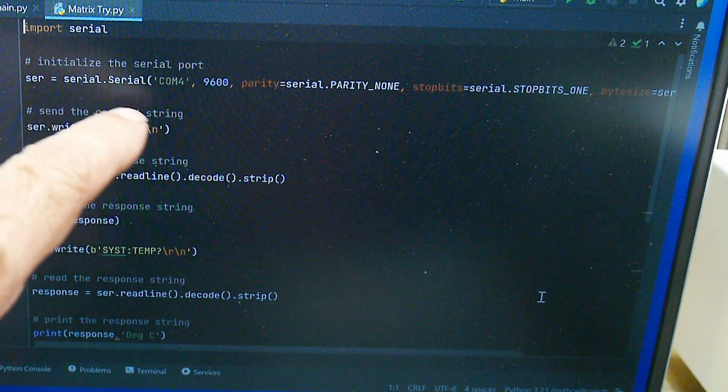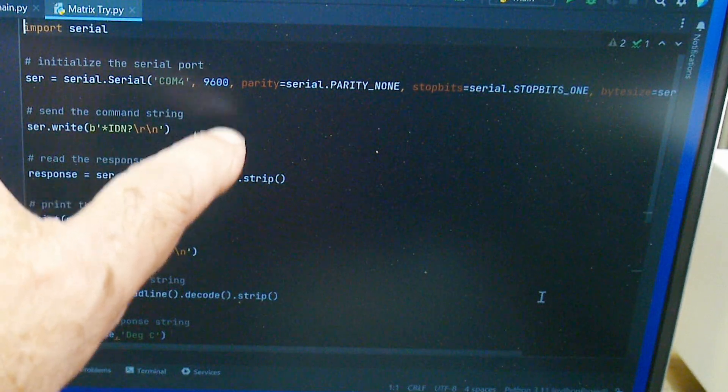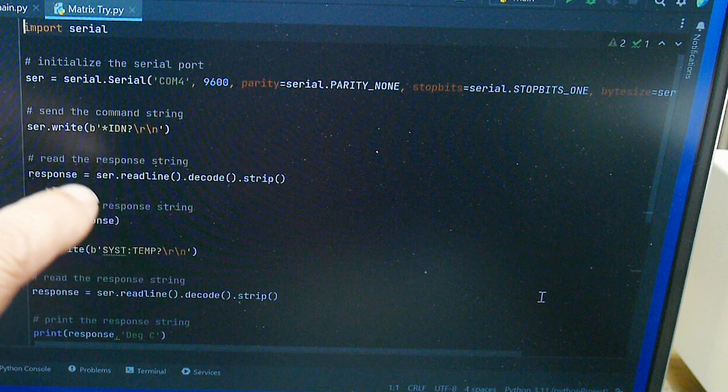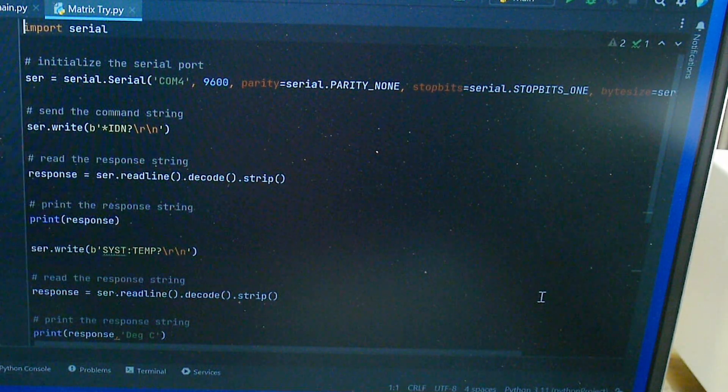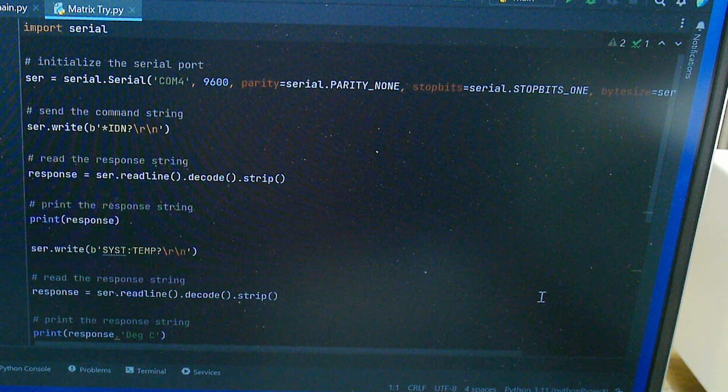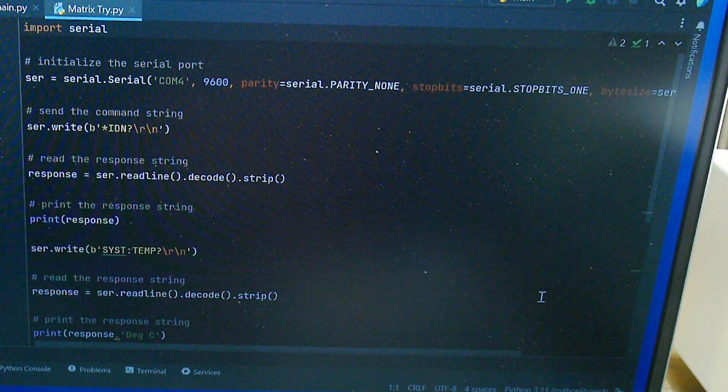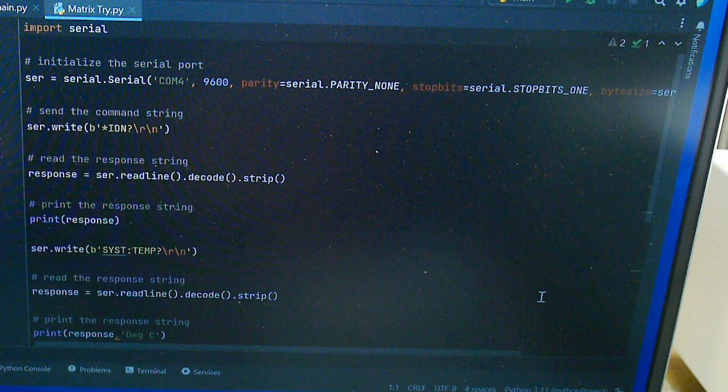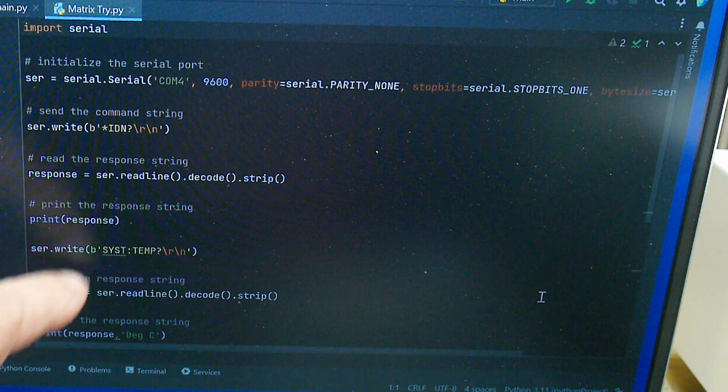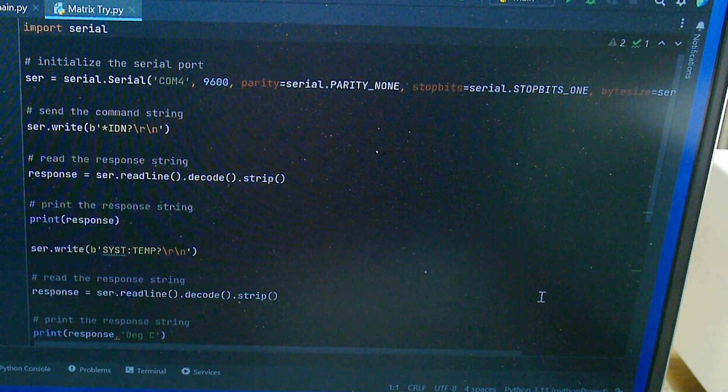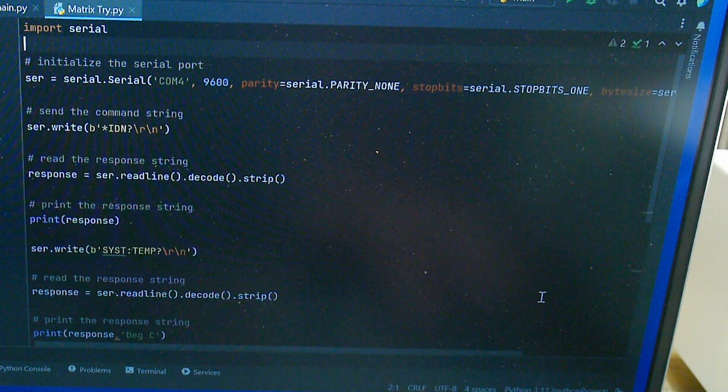You set the serial port, say serial is COM4, 9600, and you can set all the stop bits and stuff. Then I'm going to issue the command star IDN question mark, carriage return, line feed. I have the machine set up for that. Then we're going to send it, we're going to read from it, see if it identifies itself. Next thing I want to do is send it a command which was system temperature question mark, so it has a way of measuring its own internal temperature and we will execute that.